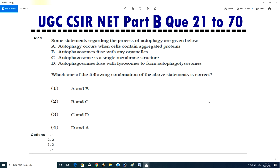Question No.14 - Some statements regarding the process of autophagy are given below. Autophagy occurs when the cells obtain aggregated protein. Autophagosomes fuse with endosome. Autophagosomes is a single membrane structure. Autophagosomes fuse with lysosome to form an autophagolysosome. Which of the following combination of above statement is correct? Answer is D.